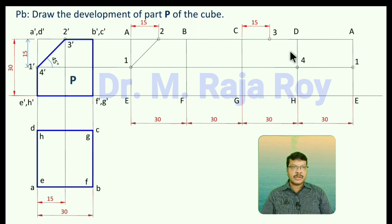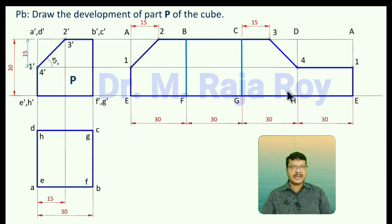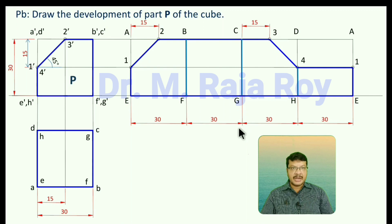Join all these points to get the outer contour. The face edge BF is completely required, so draw it as a thick line. CG is also completely required — draw a thick line. DH is not completely required; only from point 4 to H is needed, so that portion only gets a thick line and the remaining portion is removed. The retaining portion you draw as thick lines, and the portion you are removing you leave as thin lines. In this way, you can draw the development using the parallel line method.